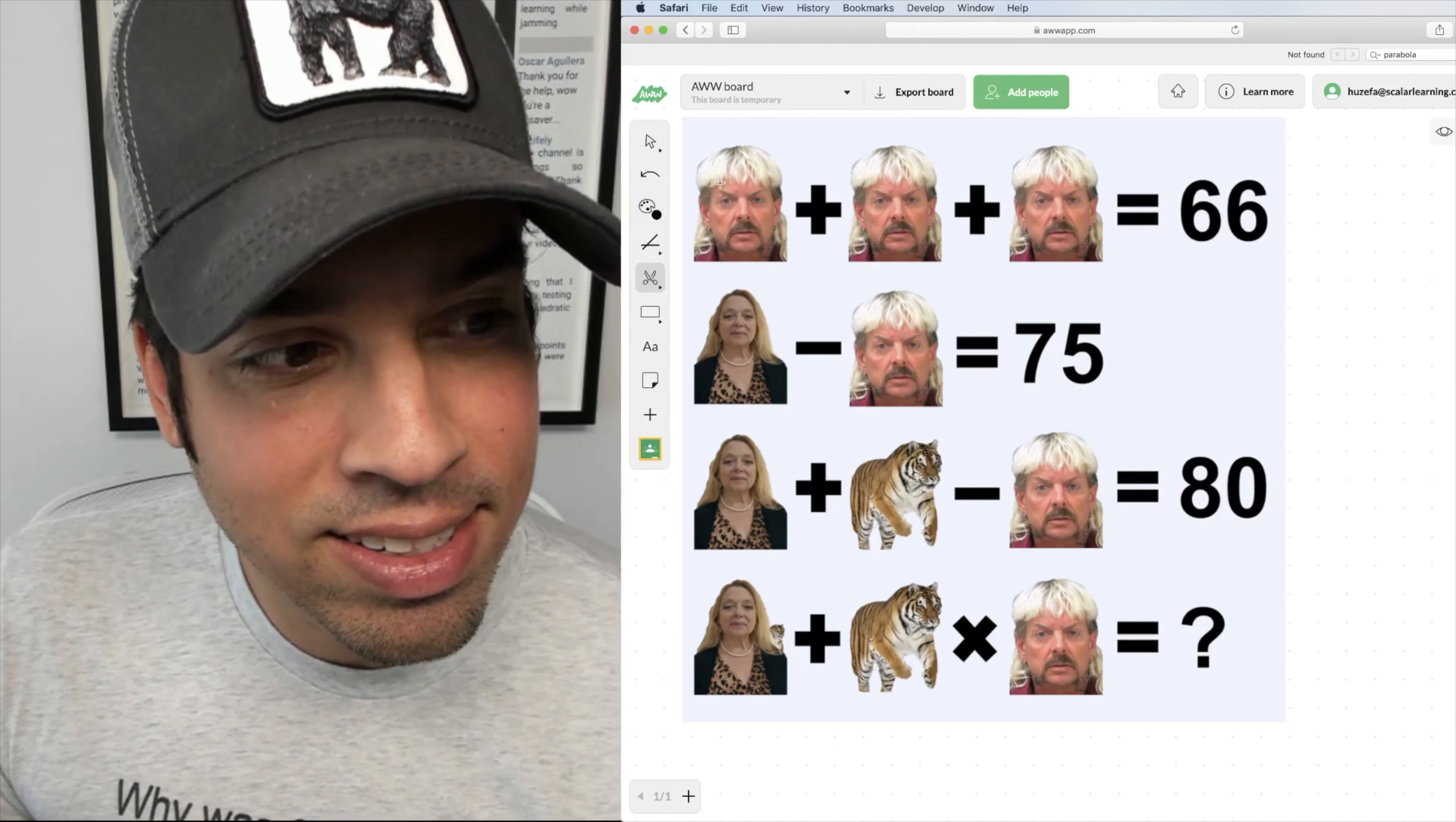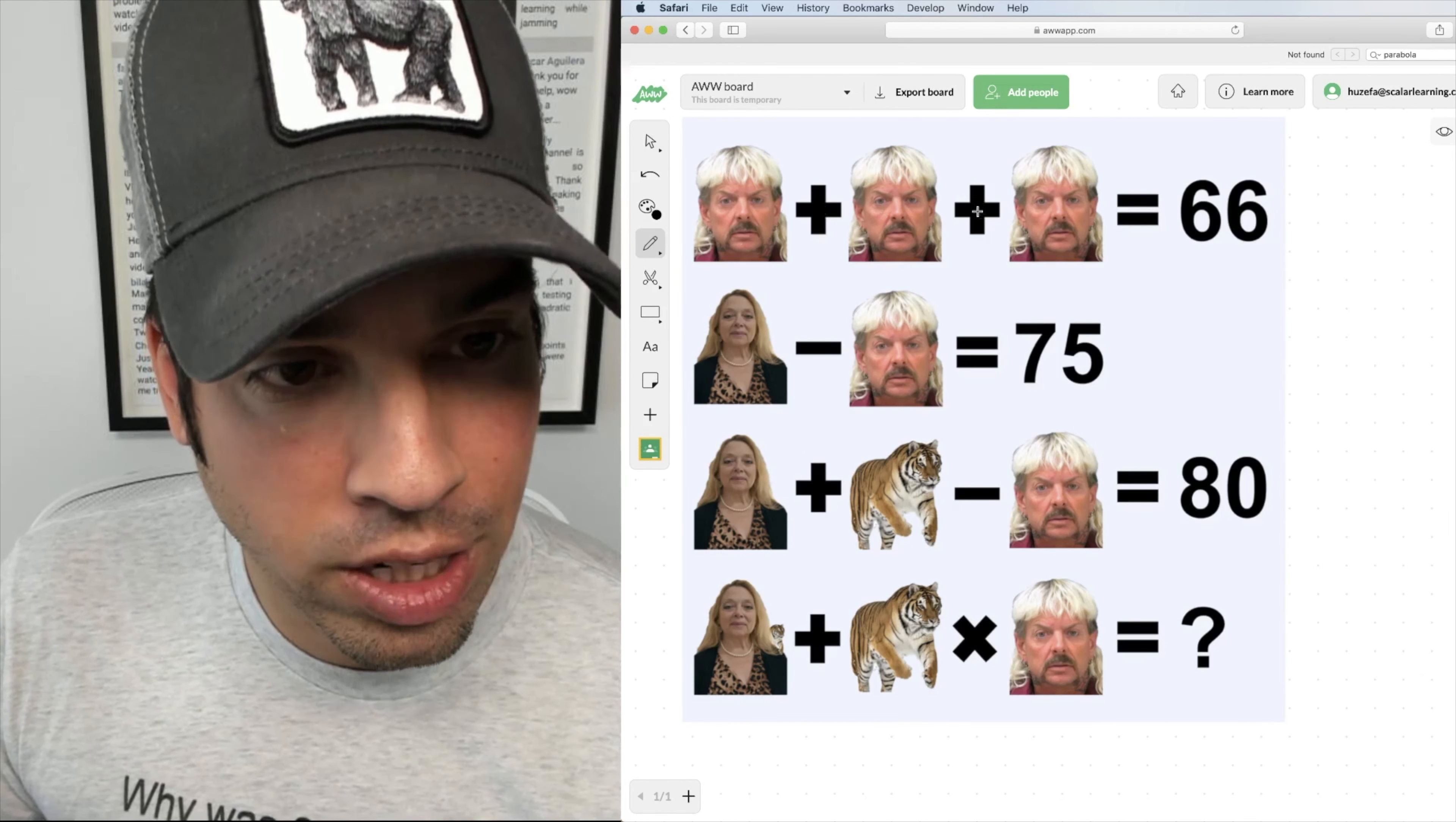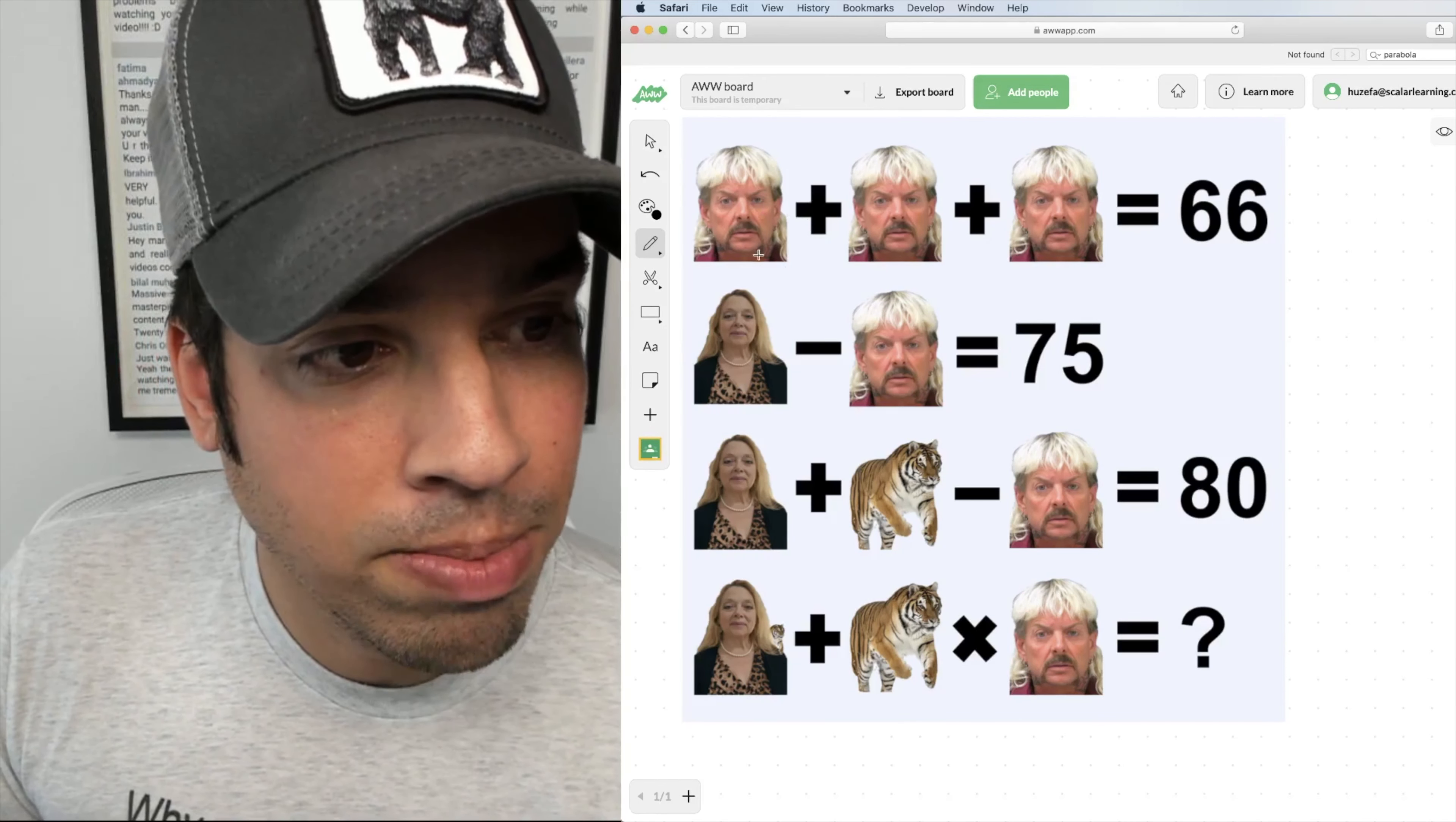All right, in these systems of equations it's important to kind of go top down and figure out the value of each individual icon or person or entity in this case, and we're just going to go top down.